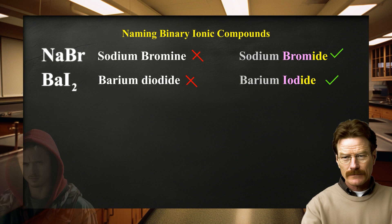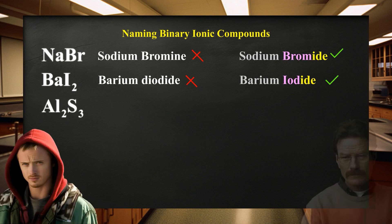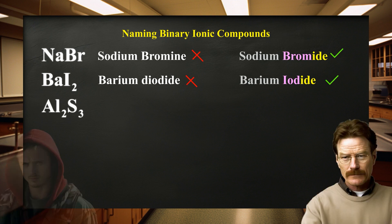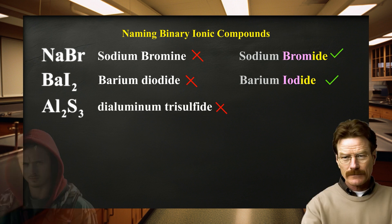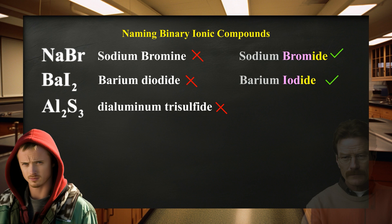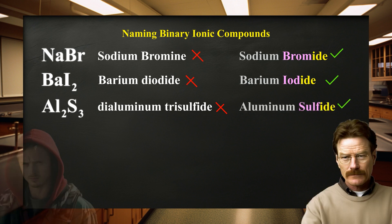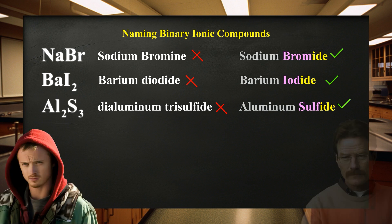We do not need to specify the number of atoms like we did with binary covalent compounds. Let's try the last one. — This one has a bunch of numbers and looks really complicated. — Do not worry about the number of atoms, Jesse. Just follow the rules: metal name first, followed by the nonmetal name with the ending -ide. — Is it dialuminum trisulfide? — Jesse, remember we do not use Greek prefixes with binary ionic compounds, so drop the prefixes and try again. — So is it aluminum sulfide? — That is correct. Just name the metal, followed by the nonmetal, with the ending -ide.